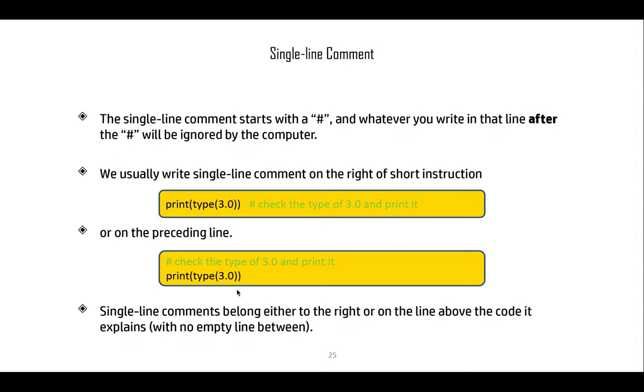The single-line comment starts with a pound sign. Whatever is after the pound sign is a comment and will be ignored by the interpreter. We usually write single-line comments to the right of a short instruction or on the line preceding an instruction.